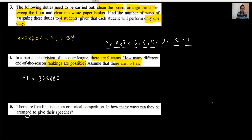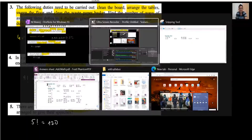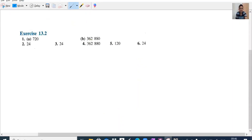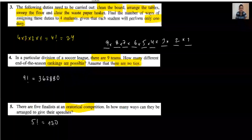Question number 5: there are 5 finalists in a rhetorical competition. How many ways can their speeches be arranged? We write 5 factorial, and 5 factorial equals 120. We can verify the answer of question number 5 is 120.